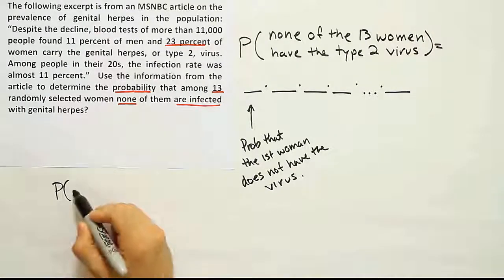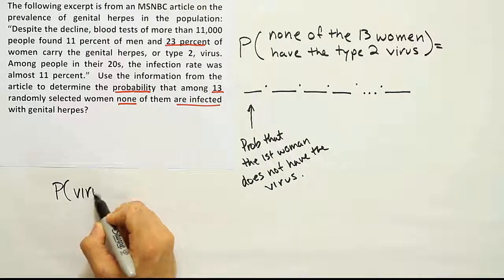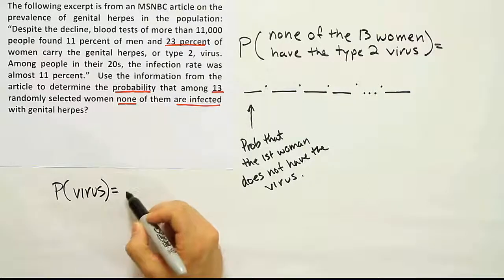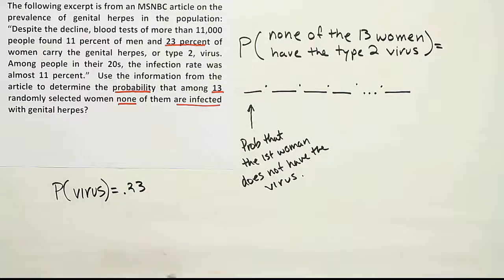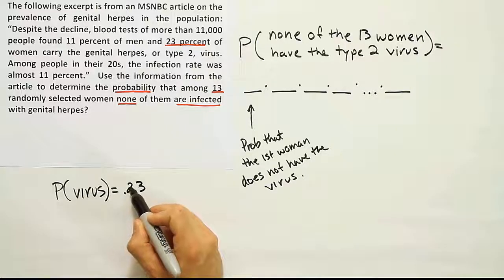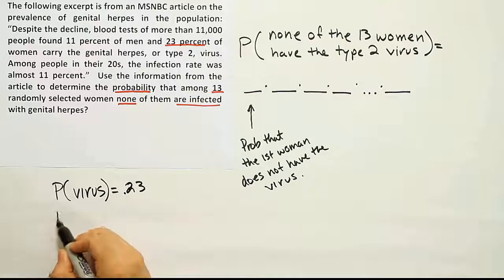So look, if the probability that someone has the virus from the female population is 23%, right, if that's the case, I should be able to get the remaining number, the number that do not have it.